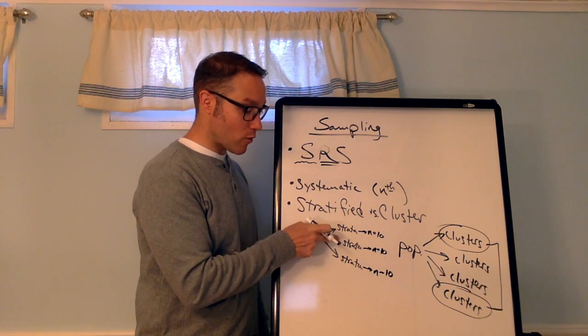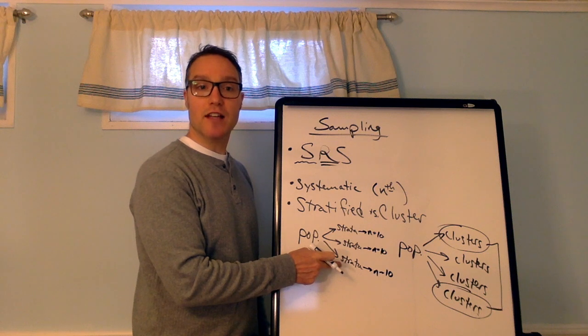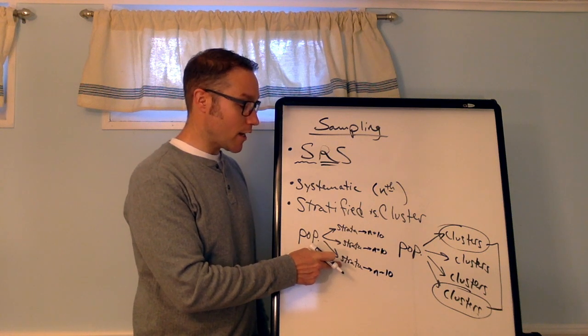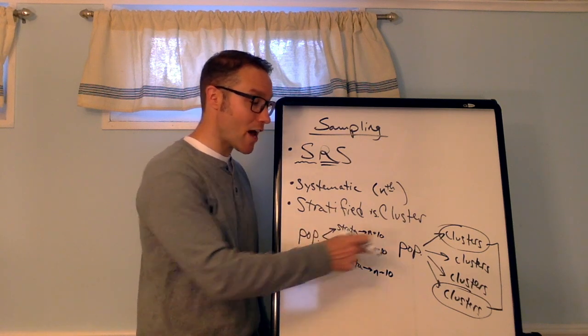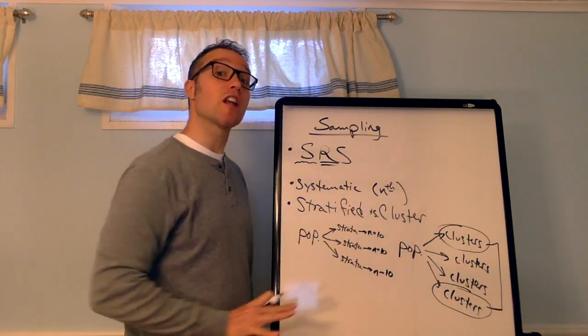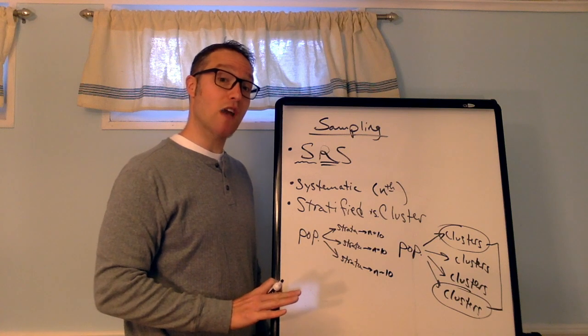All right? Whereas here, I might choose 10 from each strata out of a larger number. Okay? So maybe this is Democrat, Republican, and undecided or independent. Right? And I want to select equal representation from each strata. So I would select a sample from each strata. Here, I'm selecting entire clusters. All right? So that's the difference between stratified and cluster.